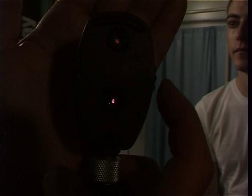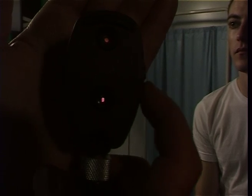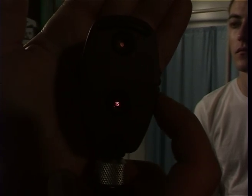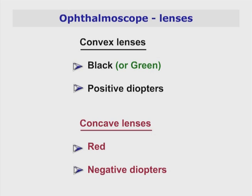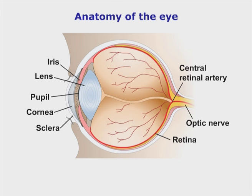The lenses are numbered in diopters. Usually the convex lenses are labeled with black numbers which signify positive diopters. In the opposite direction, the numbers labeled in red signify lenses with negative diopters. Generally, positive diopters are used to visualize the anterior segments of the eye and the negative diopters to examine posterior segments.